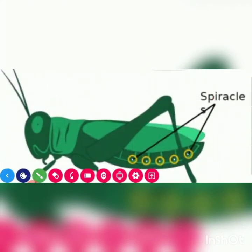Insects — cockroaches, butterflies — insects breathe through tiny holes in their body.